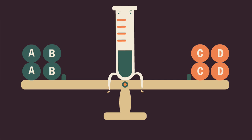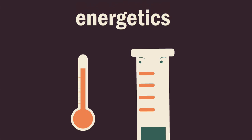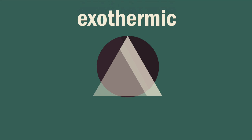To consider what happens to a system at equilibrium when temperature is changed, you must first consider the energetics of the reaction in question. If the forward reaction is exothermic, then the reverse reaction must be endothermic.